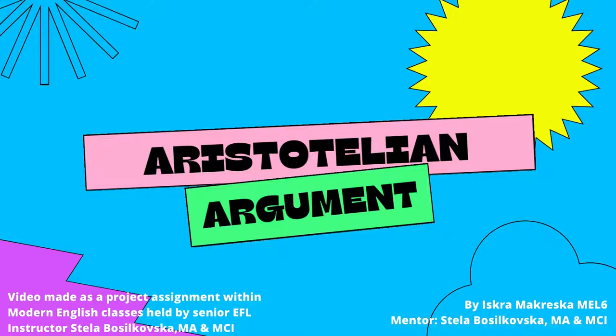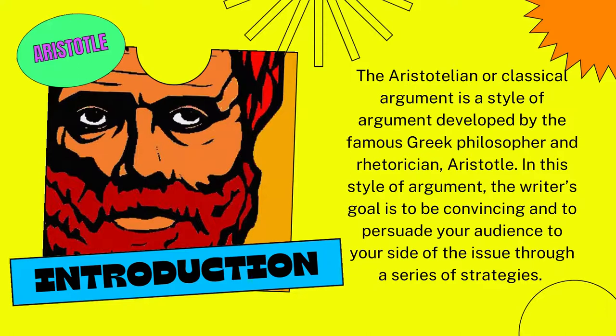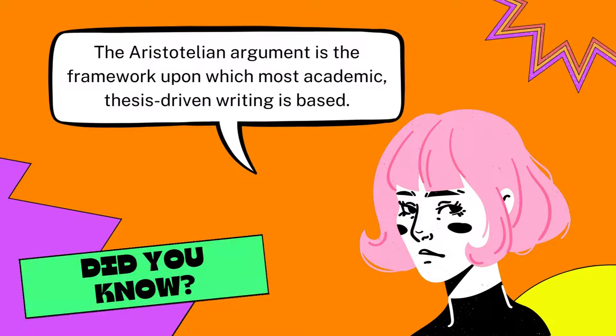Today we'll be talking about the Aristotelian argument. The Aristotelian, or classical argument, is a style of argument developed by the famous Greek philosopher and rhetorician Aristotle. In this style of argument, the writer's goal is to be convincing and to persuade your audience to your side of the issue through a series of strategies. The Aristotelian argument is the framework upon which most academic, thesis-driven writing is based.